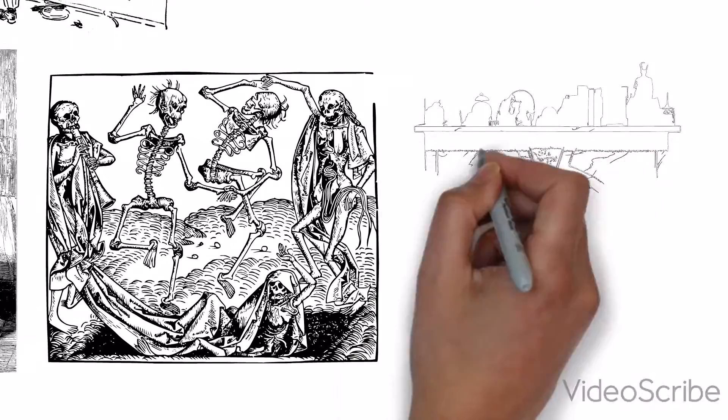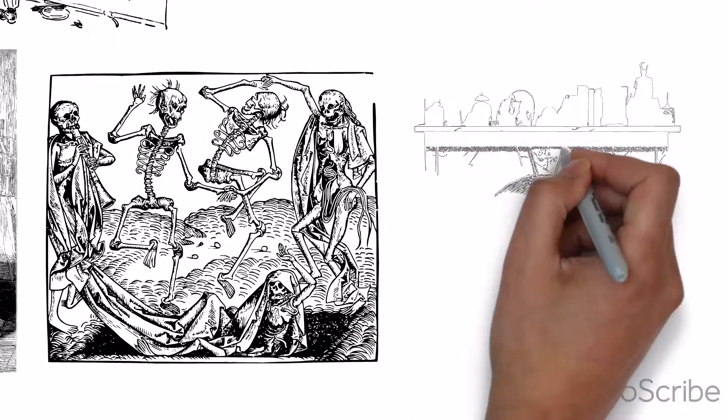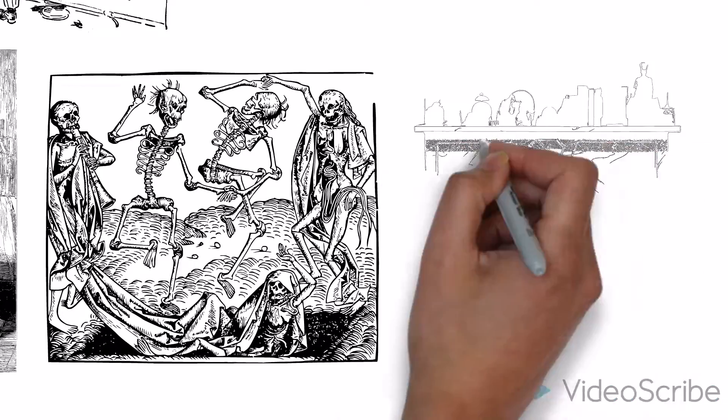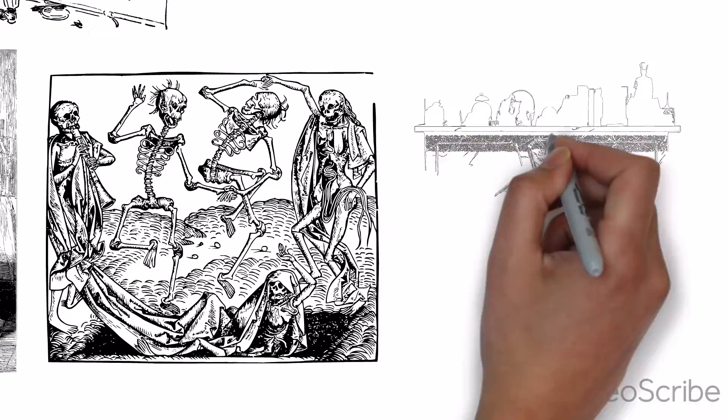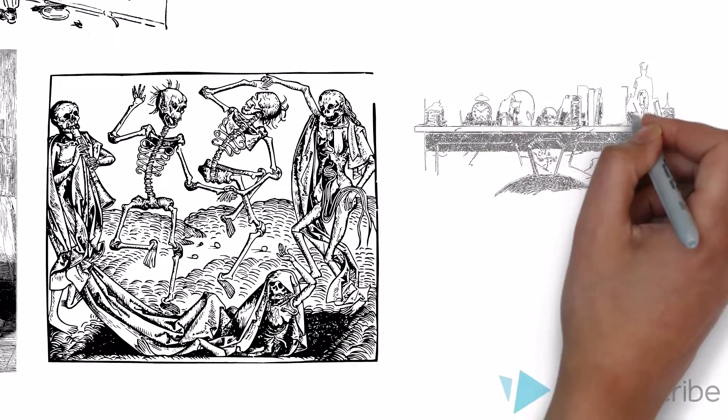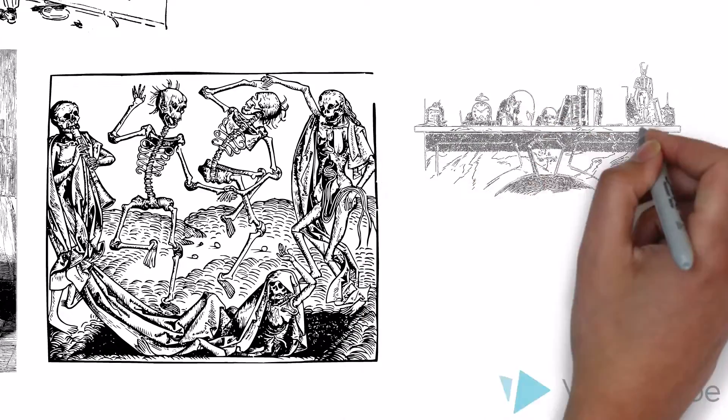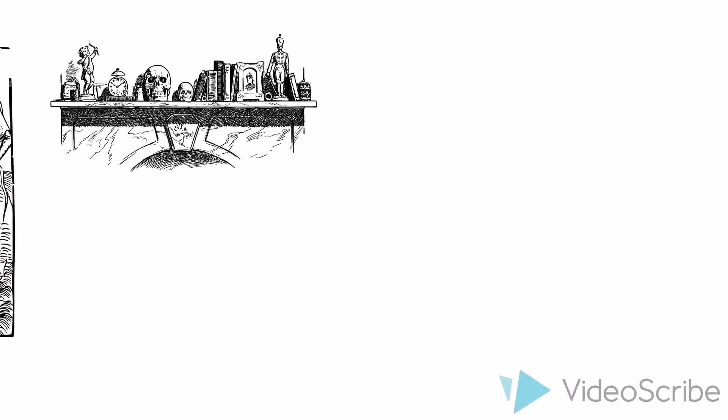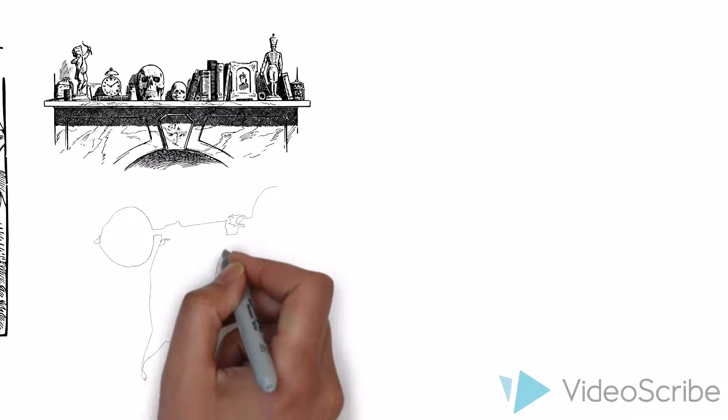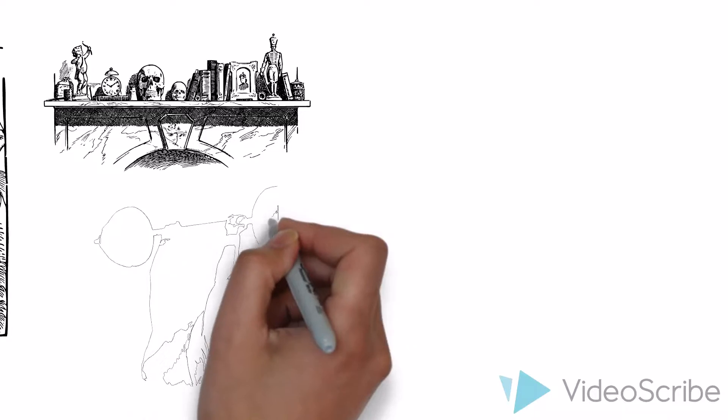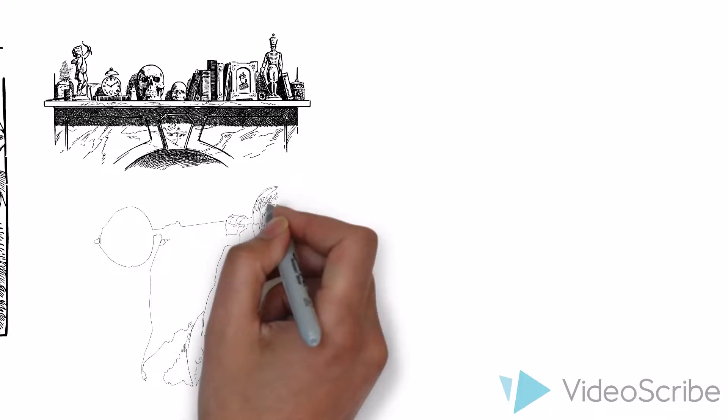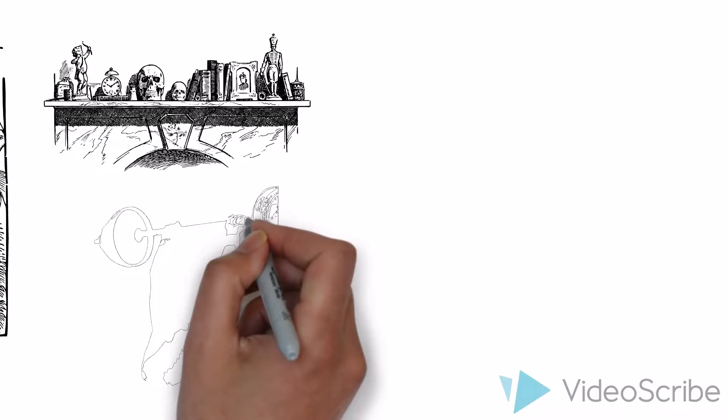Well, Seneca challenges us and says it's not difficult to scorn life. Don't we see the crazy reasons that make men to hate their lives? One person hangs himself before the door, his ex-girlfriend who dumped him. Another jumps off a building because he cannot bear a bad-tempered boss. A third to be saved from arrest after running away drives a sword into his chest. Now we have to ask ourselves, don't you think that staying strong and having a great character will produce successful results more than excessive fear?